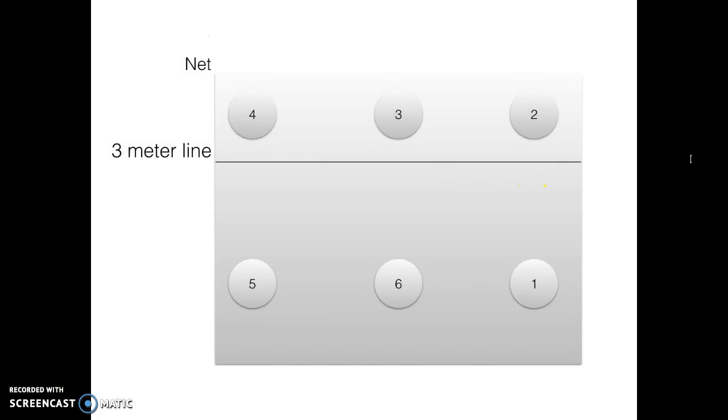With the 5-1 system we play with one setter. After the service, the setter will always move to the setting position, which is on the purple spot. So if the setter starts in the back, like on position 5, you have three attackers on position 4, 3, and 2.